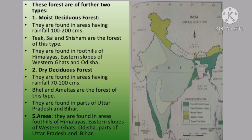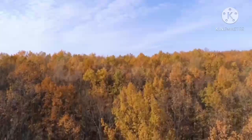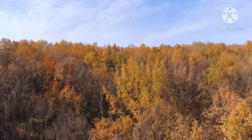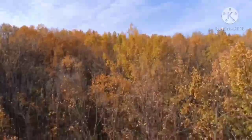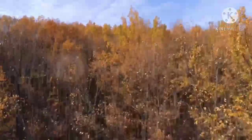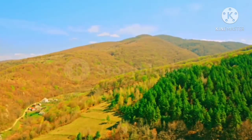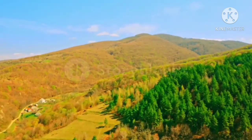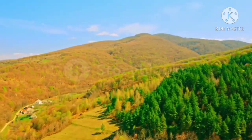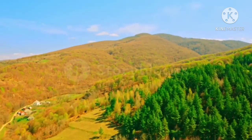The dry deciduous forests are found where the rainfall ranges between 70 to 100 cm. These are found in the peninsula and in Uttar Pradesh and Bihar. These forests shed their leaves in the dry season. Tendu, Palash, Amaltas, Bel, and Kher are the common trees in the dry deciduous areas.